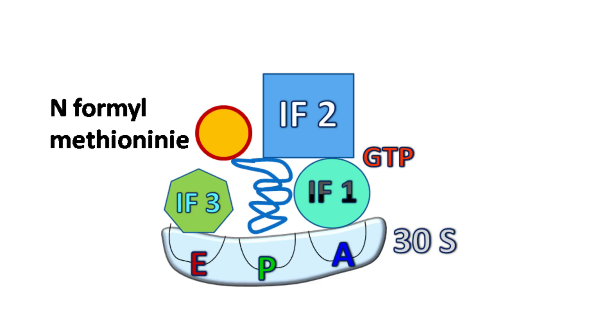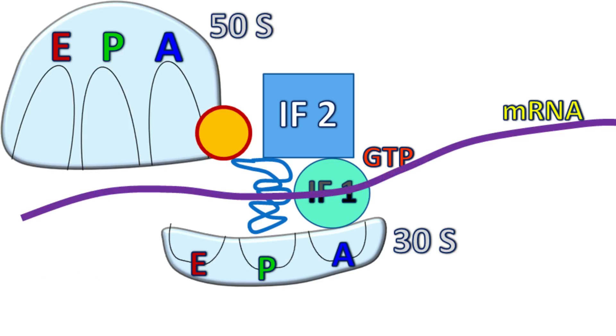The binding of IF2 along with N-formylmethionine-charged tRNA to the P side causes IF3 to release from the E side. Next, as IF3 is released, 50s subunit along with the mRNA binds to the 30s subunit.